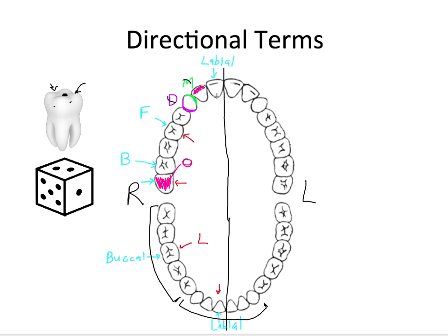For the occlusal surface, we can distinguish between a posterior tooth — which uses the term occlusal, where we're chewing and biting and grinding food — and the anterior teeth, where occlusal would be technically correct but we tend to use 'incisal' instead. It makes sense for the incisors, and the canines are also referred to as having an incisal surface because they have one cusp that bites and slices into food. So incisal surface tends to be more precise for anterior teeth.